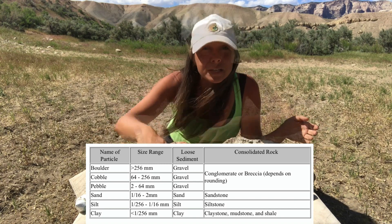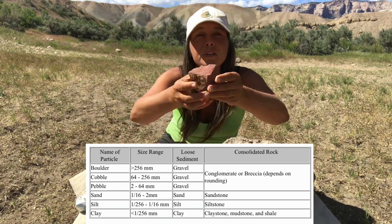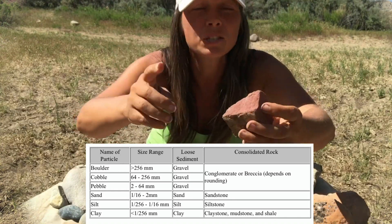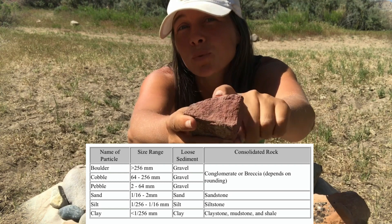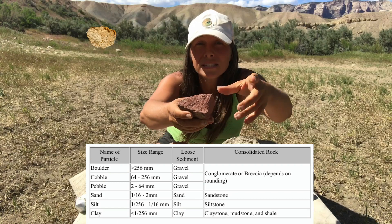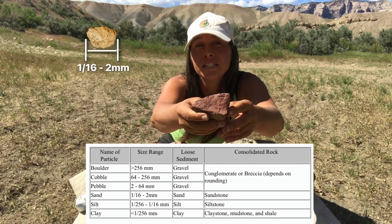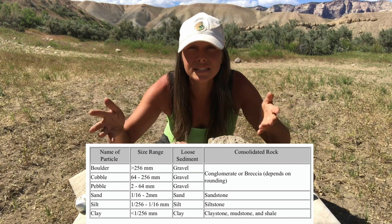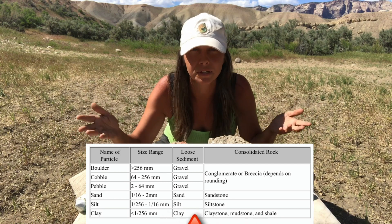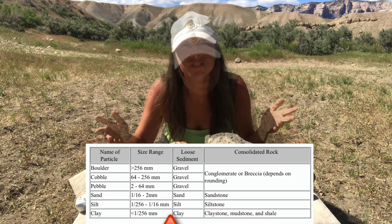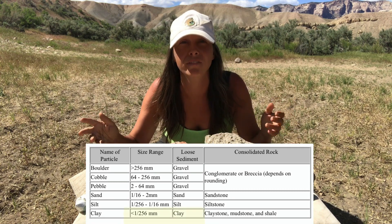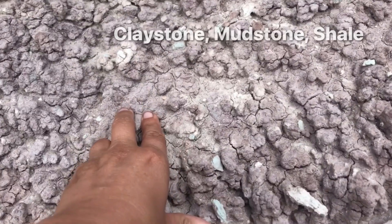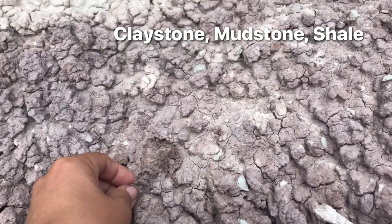All the rest of them are somewhere in between. Take a look at this sandstone right here — you might recognize it's made of sand, but sand also has a specific size. Sand grains are defined as 1/16th to 2 millimeters in size. The clays are the finest grain size, less than 1/256th of a millimeter, and that gives us claystones, mudstones, and shales.